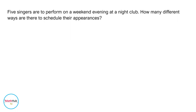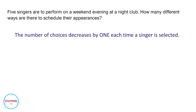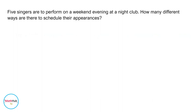Let's take a look at the following permutation problem. Five singers are to perform on a weekend evening at a nightclub. How many different ways are there to schedule their appearances? Notice that in this problem the number of choices decreases by one each time a singer is selected, so therefore this is a problem on permutation.